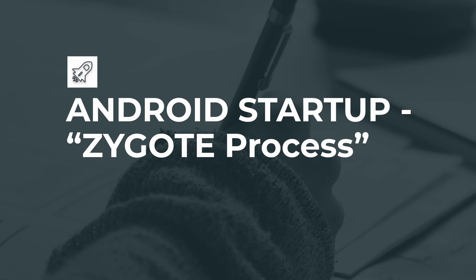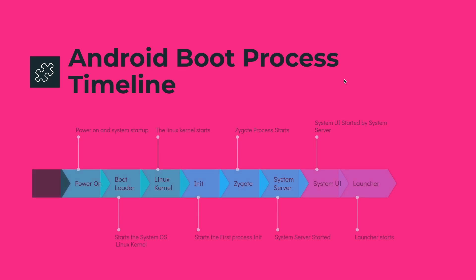In a previous lecture, we discussed about the init process and we have seen how it starts the Zygote process. We also walked through the code. So in this session, we will start right from there and continue with the Zygote process. We will see how Zygote starts the system server and waits for the request from Activity Management Service or AMS to create a new process.